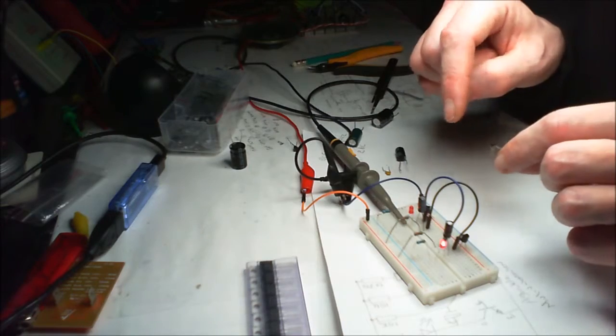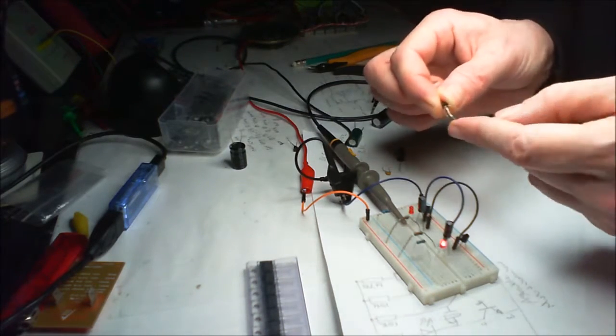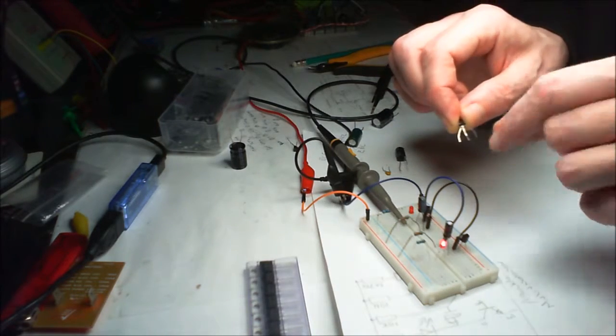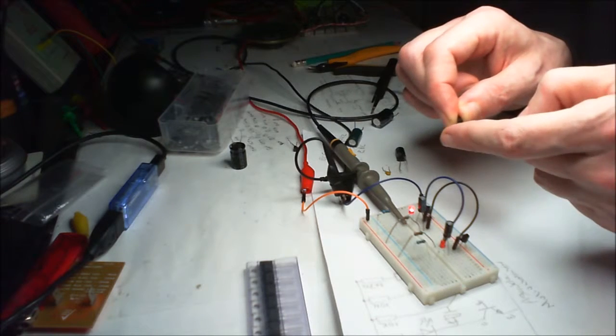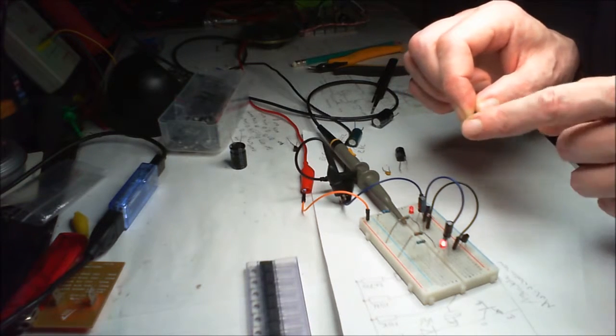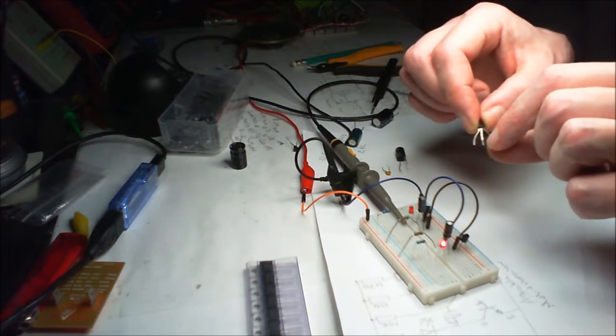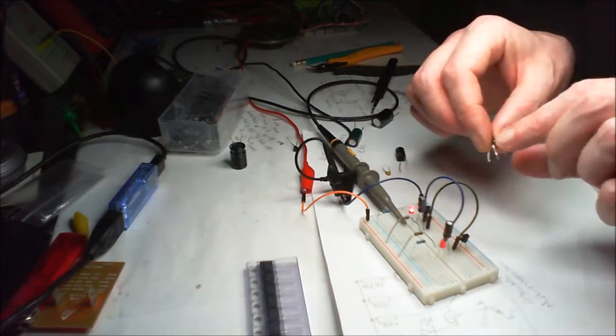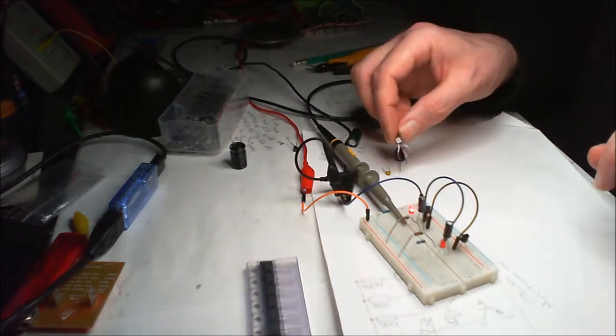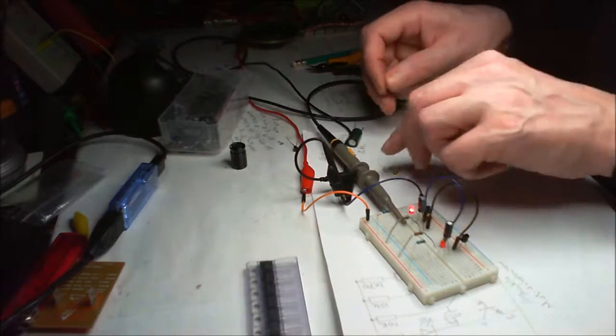And you can use BC547s. The wiring's different. These ones are collector, base, emitter. And on the 2N2222s, they're emitter, base, and collector. So you can swap these around if you haven't got the 2N2222s. You can swap them for these BC547s or any of the common NPNs.